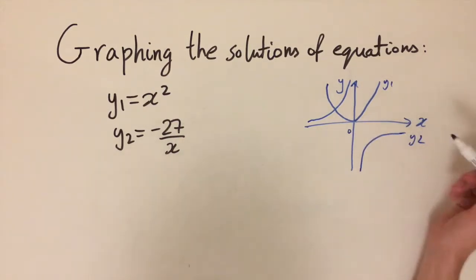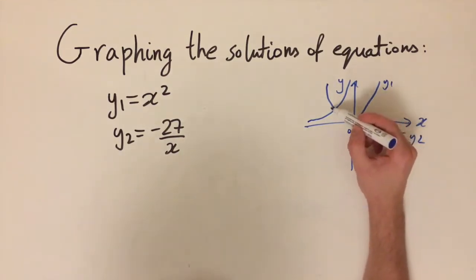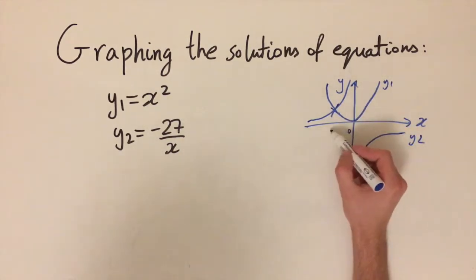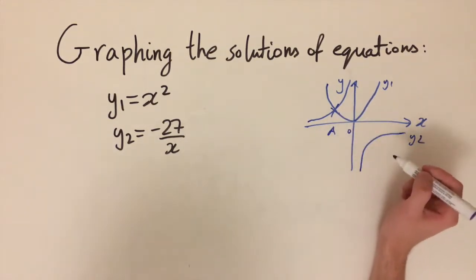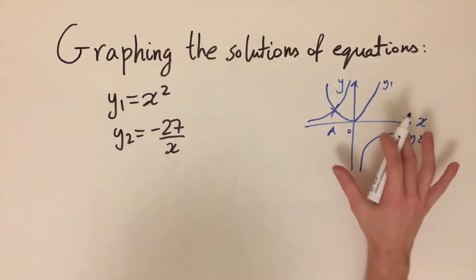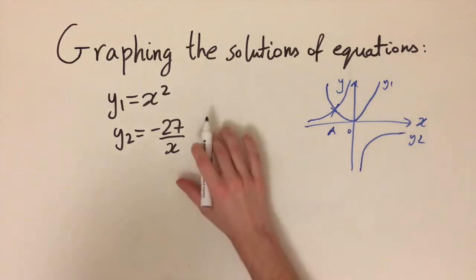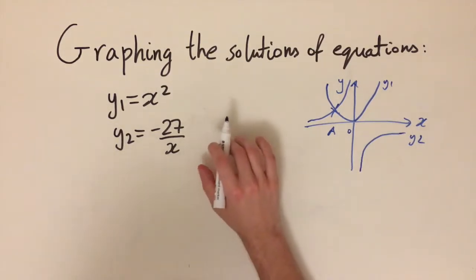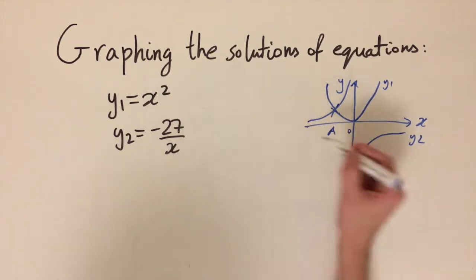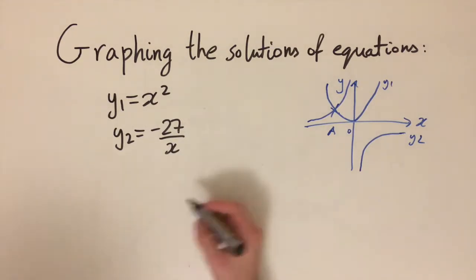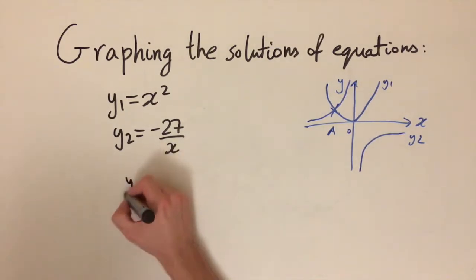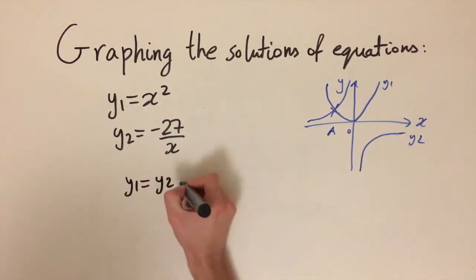Labeling the curves y1 and y2, we see these functions only intersect in one place. There is just one point of intersection, which we label A. So from the graph alone we expect exactly one solution.